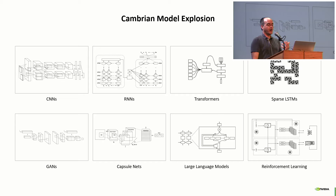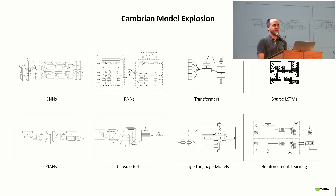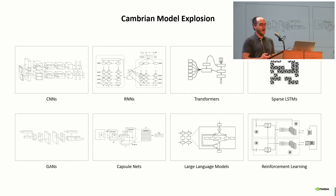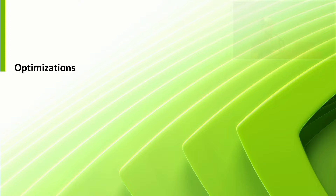This application layer takes all these different models. Someone — I believe it was Jensen — termed the 'Cambrian model explosion' around 2016, where originally we had just ConvNets and RNNs, but now we have transformers, sparse LSTMs, generative adversarial networks, capsule nets, and more recently large language models with generative AI and reinforcement learning. All these different networks have to be mapped down to the hardware, and this software is how you do that.